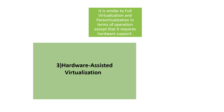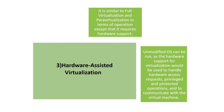The next type is hardware-assisted virtualization. This is similar to full virtualization and para-virtualization in terms of preparation, except that it requires hardware support. Here, the OS runs unmodified — unlike para-virtualization where the OS is modified. Hardware support for virtualization is used to handle hardware access requests, privileged and protected operations, and to communicate with the virtual machine.